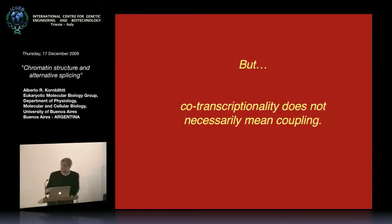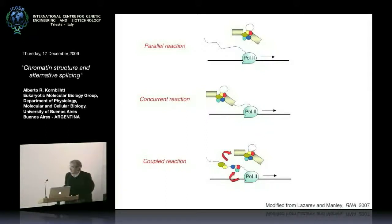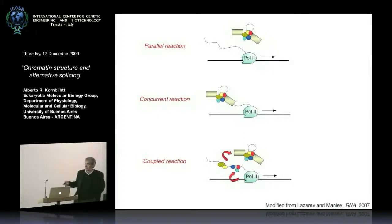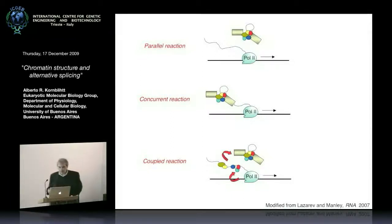But co-transcriptionality doesn't necessarily mean coupling. As explained in a paper by Lazareva and Manley in RNA in 2007, there could be three different situations: a parallel reaction where splicing is clearly post-transcriptional; a concurrent reaction where splicing takes place before Pol2 reaches the end of the gene; and a coupled reaction, where the recruitment or kinetics of transcription affect the rate or outcome of splicing, and vice versa.